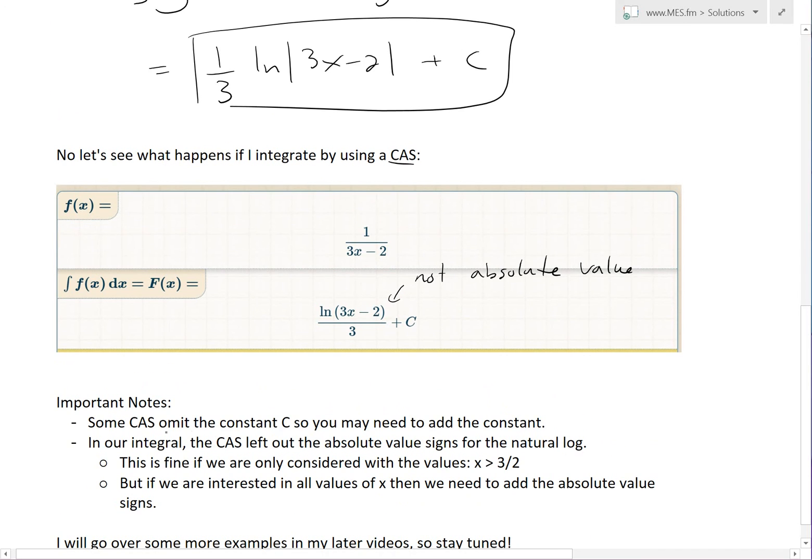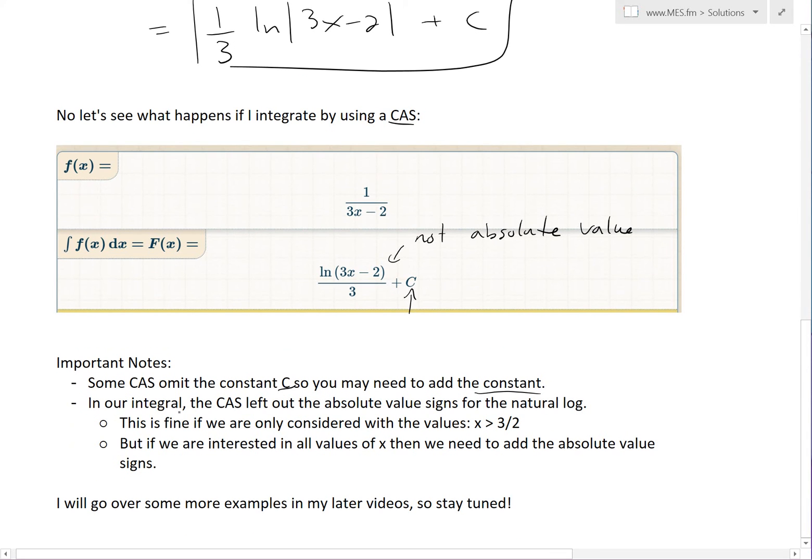basically some CAS, first of all, omit the constant c. In this case, we had it. So you may need to add the constant. Some of them don't have that. And basically in our integral, the CAS left out the absolute value signs for the natural log.